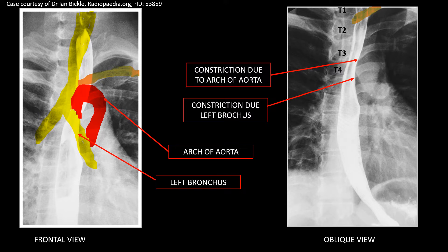As seen in the frontal view, this is the trachea, which at the T4 level bifurcates into the left bronchus and right bronchus. This is the arch of the aorta, and this is the clavicle. In the oblique view, we can identify a constriction due to the arch of the aorta and a constriction due to the left bronchus. The fourth constriction is at the point where the esophagus pierces the diaphragm, and the first constriction is at the initiation of the esophagus. These four are normal anatomical constrictions of the esophagus.